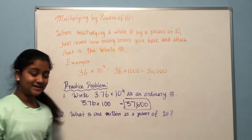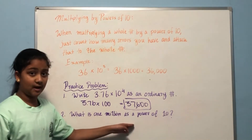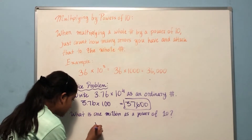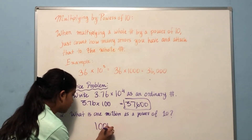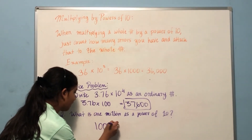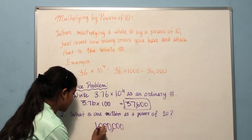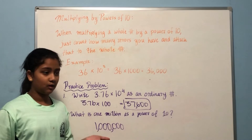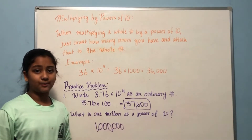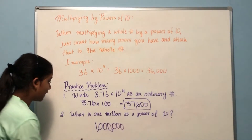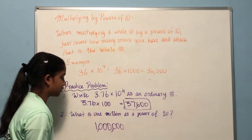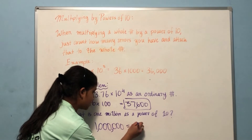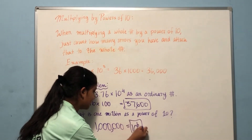Now let's do the second practice problem: what is one million as a power of ten? One million has six zeros. The power indicates how many zeros there are, and in this case we have six zeros, so the power is obviously going to be six. Ten to the power of six equals one million.